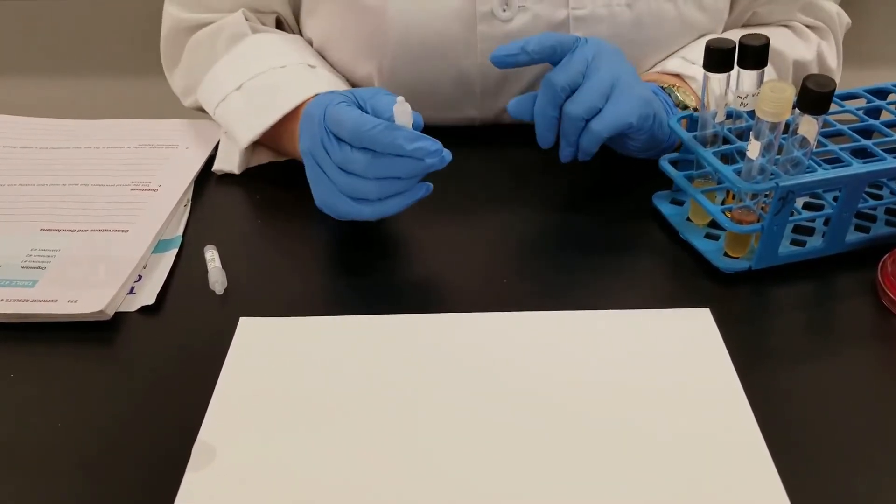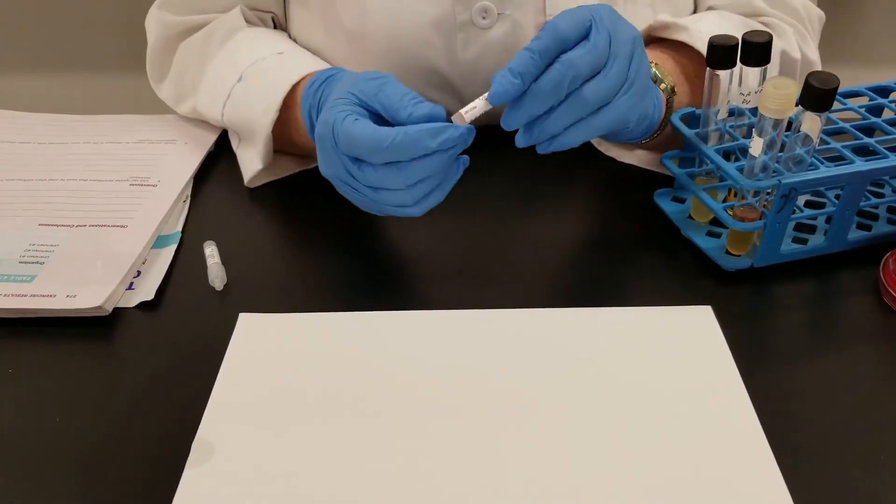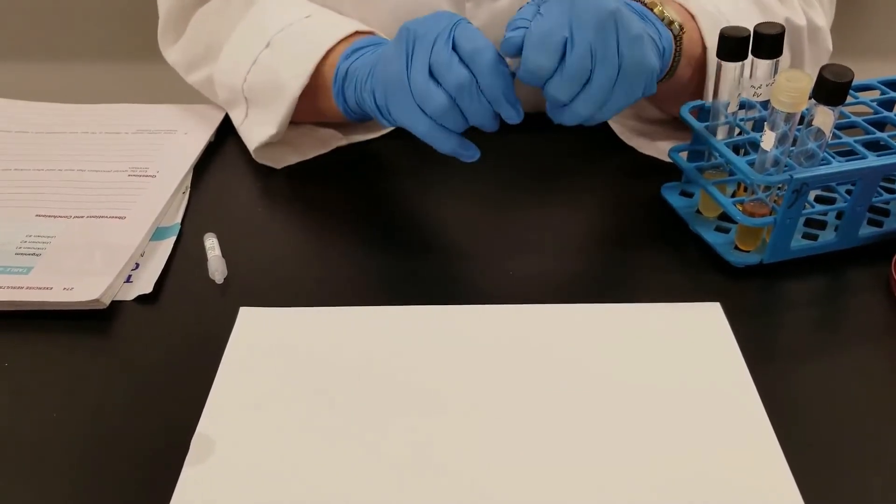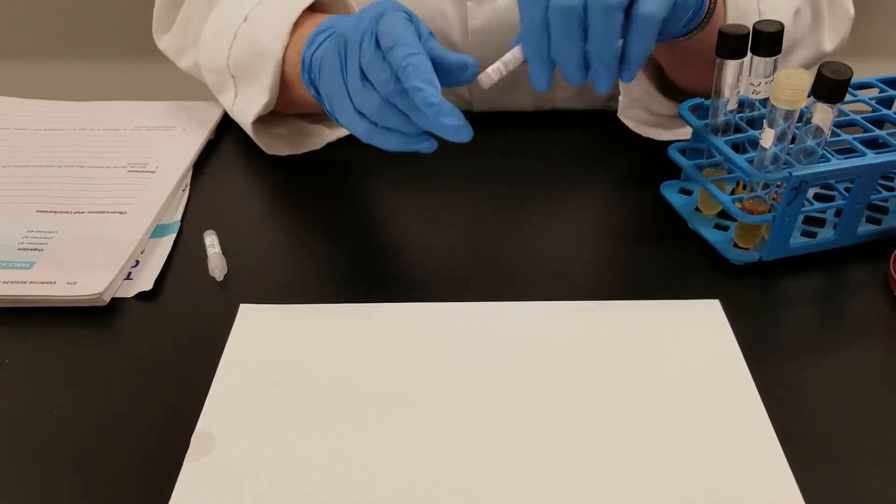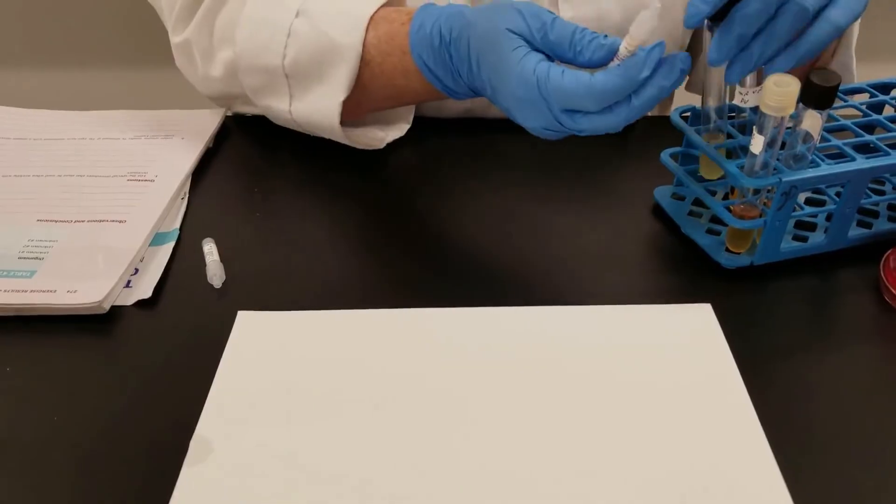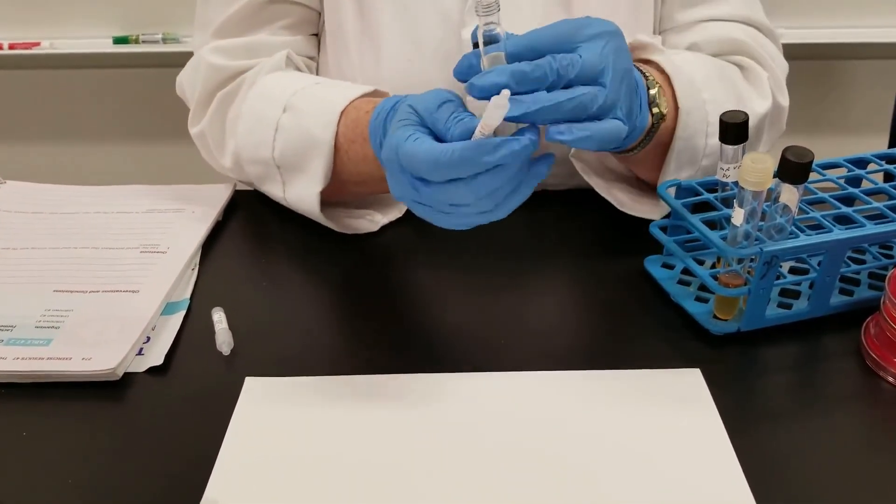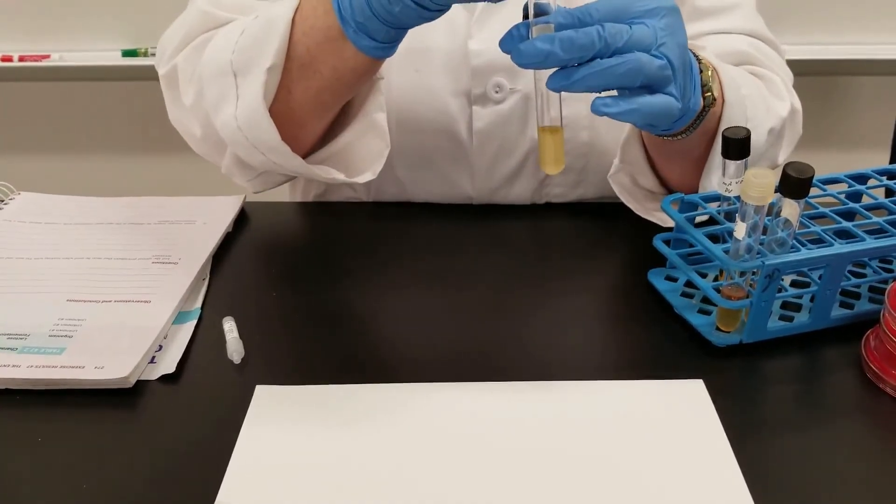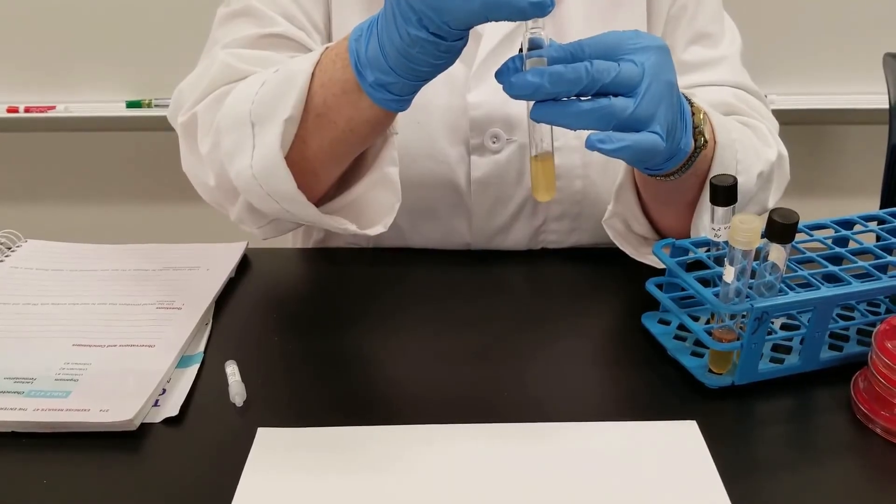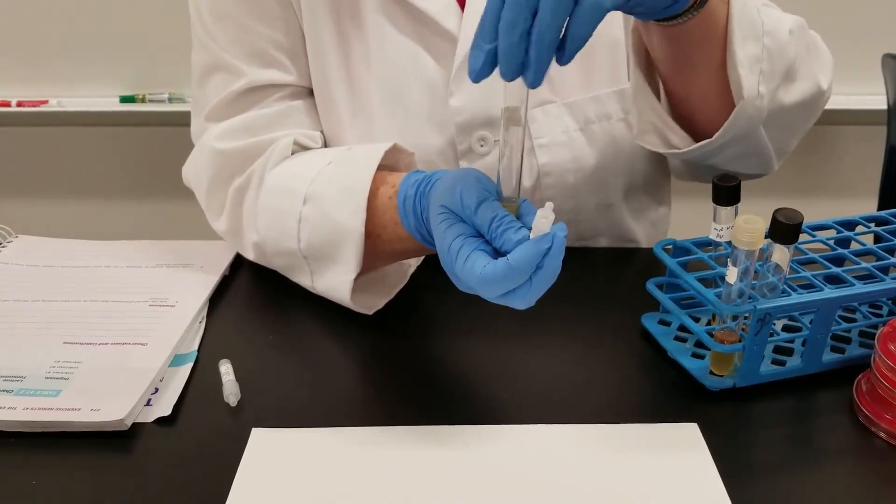For this one we are going to add reagents - there are two different reagents, an A and a B. With these there is a little glass tube in here. If you just push it you can hear that it breaks, and then you will add about ten drops by squeezing the tube. That is the A. I am going to go ahead - this is Enterobacter aerogenes.